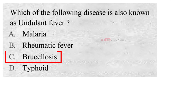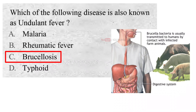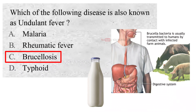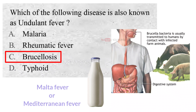C. Brucellosis. Brucellosis is a highly contagious zoonosis caused by ingestion of unpasteurized milk or undercooked meat from infected animals, or close contact with their secretions. It is also known as Malta fever or Mediterranean fever.